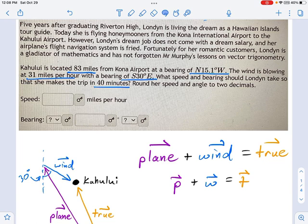So this is actually a really common application. What we've got here is information about where the plane is flying. I've circled here 83 miles, north 15.1 degrees west. That's the plane's target. Then we've got the wind, which is going at 31 miles per hour at a bearing of south 30 degrees east. We want to make the trip in 40 minutes.